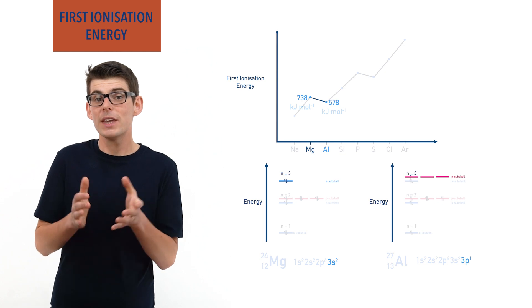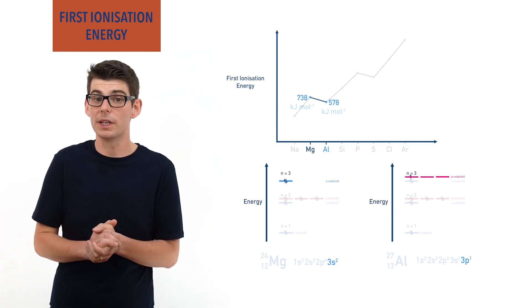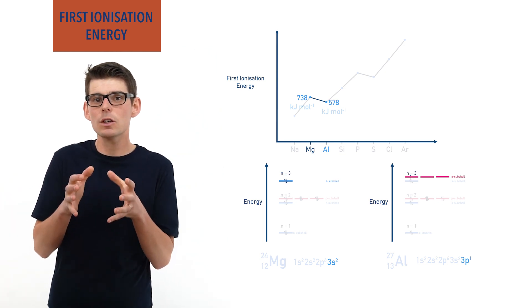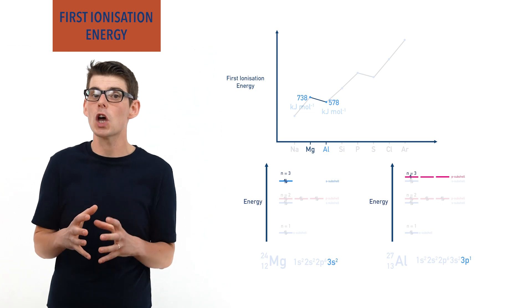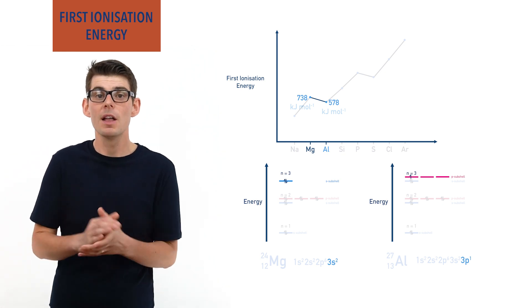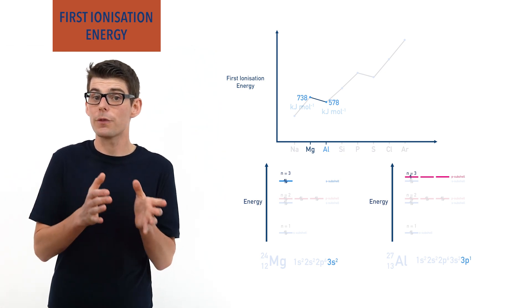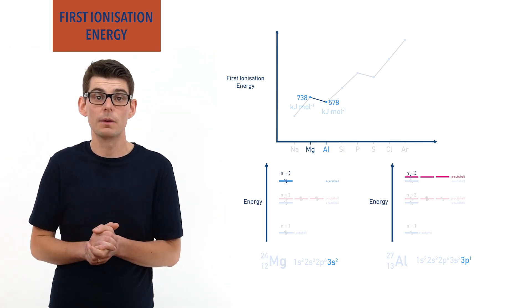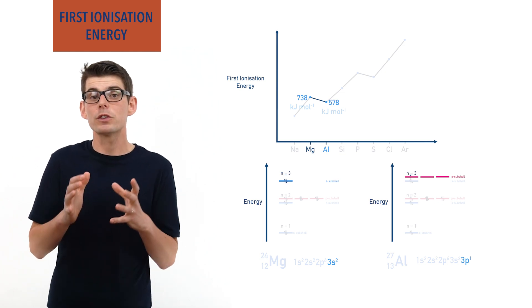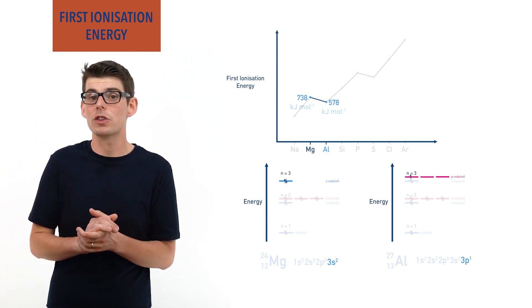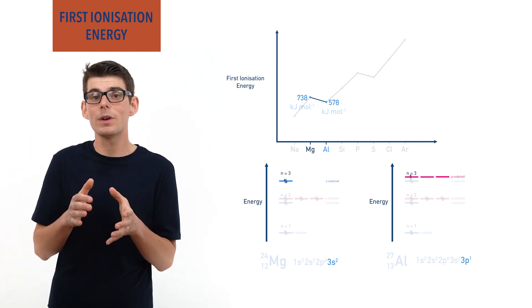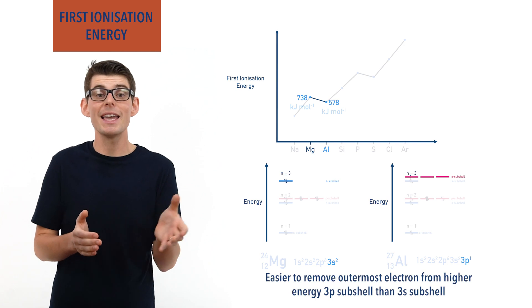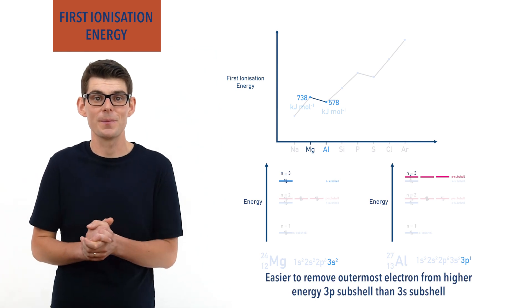The increase in positive charge of the nucleus from 12+ to 13+ just isn't quite enough to overcome the increased energy from the 3s to the 3p subshell, and as a result the strength of attraction is weaker and the electron is more easily removed, giving a lower first ionization energy.